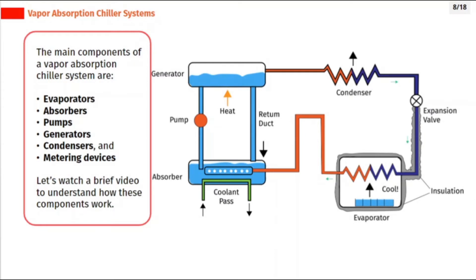The main components of a vapor absorption chiller system are evaporators, absorbers, pumps, generators, condensers, and metering devices. Let's watch a brief video to understand how these components work.